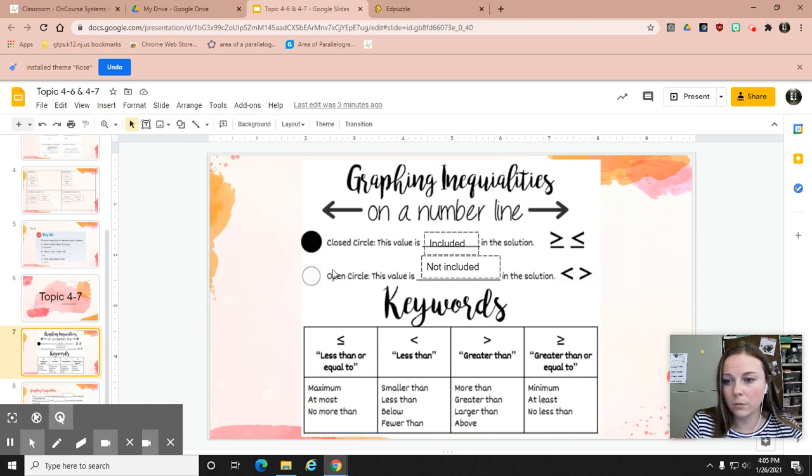An open circle, think about an open circle, it's kind of like it's unchecked. That would not be included. So if I had x is greater than 5, I'm still going to put my circle on 5, but I'm not going to fill it in. So x is greater than 5 would have a circle, and then I'll show you the next part on how to shade the number line.